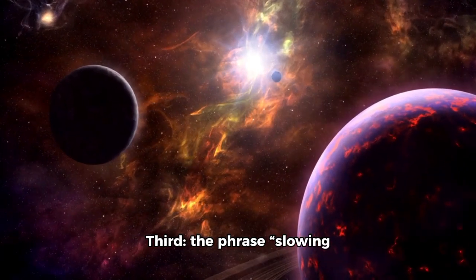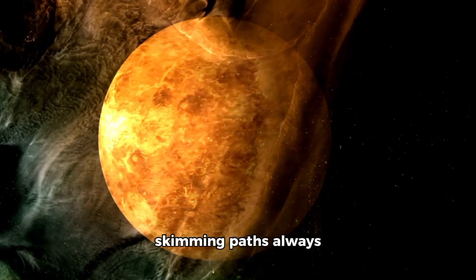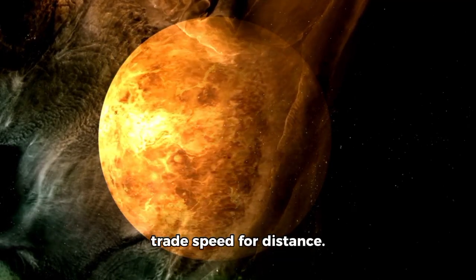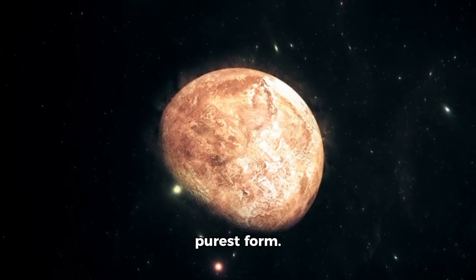Third, the phrase slowing down needs context. Objects on open, sun-skimming paths always trade speed for distance. Gravity causes their outbound deceleration, it's weaker farther from the sun just as it's stronger closer in. Kepler, in its purest form.